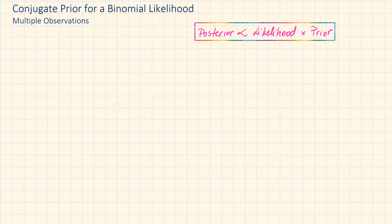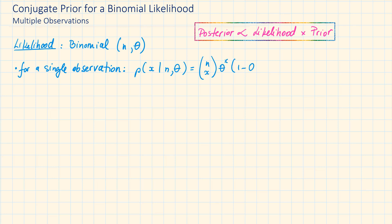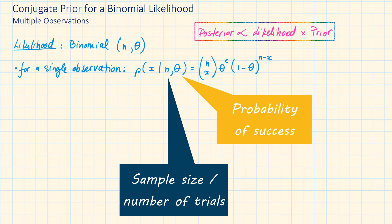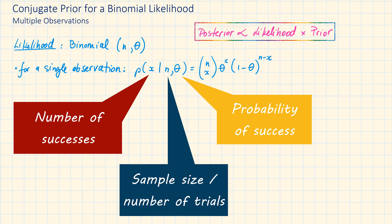In the previous video, we have seen that the binomial likelihood with parameters n and theta for a single observation can be described as the probability of x given n and theta equals n choose x times theta to the power of x times 1 minus theta to the power of n minus x. Theta represents the probability of success, n represents the total sample size or number of trials, and x represents the number of successes.